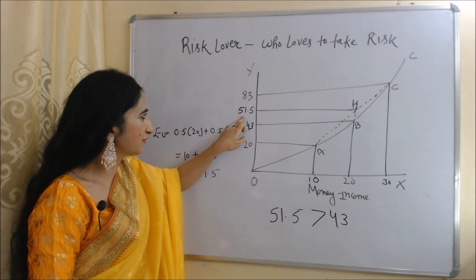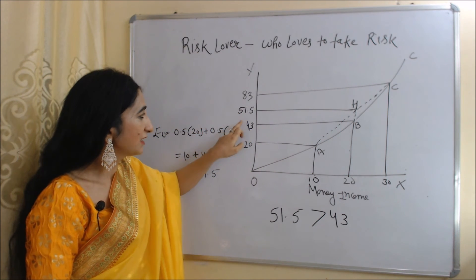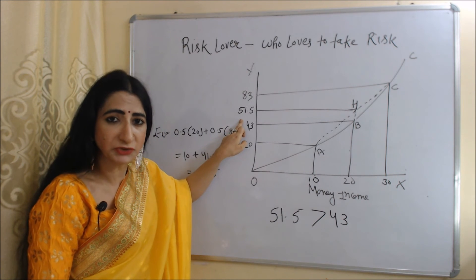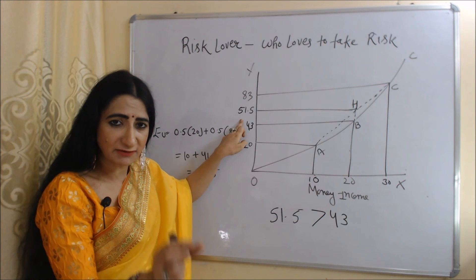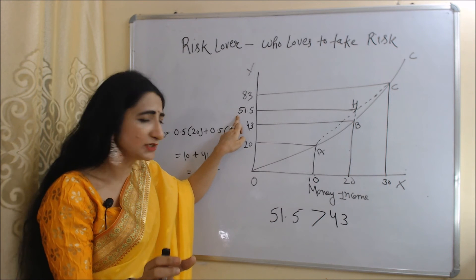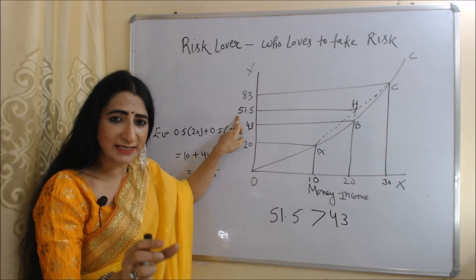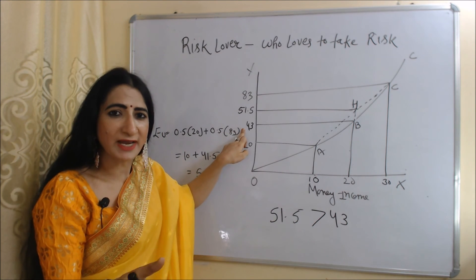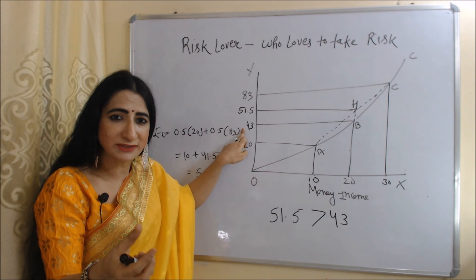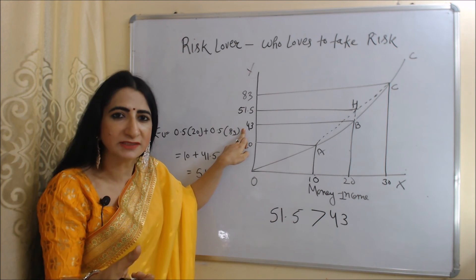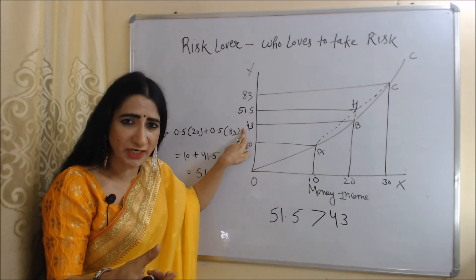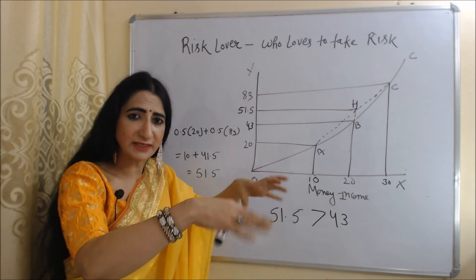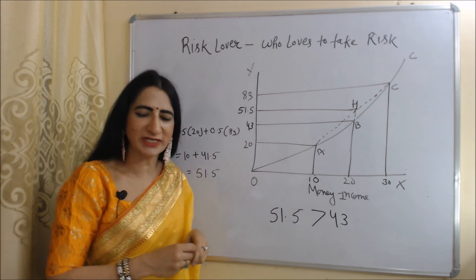The new equilibrium point H shows a utility of 51.5, which is higher than the current utility of 43. So this investment proposal gives risk lovers higher utility compared to their current utility. Their utility is higher because risk lovers want to take more risk — as their income increases, their marginal utility also increases.